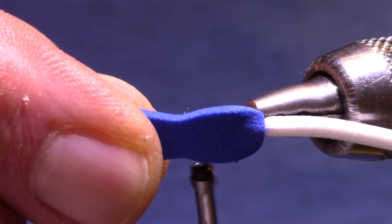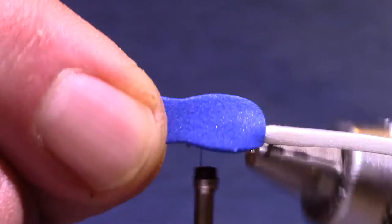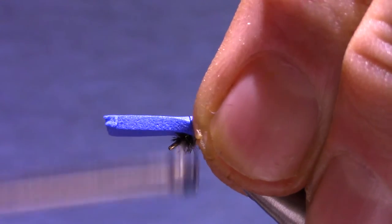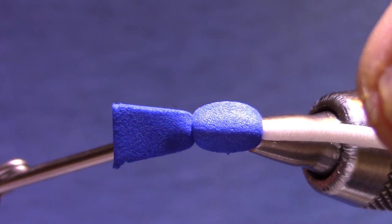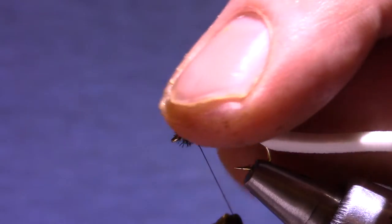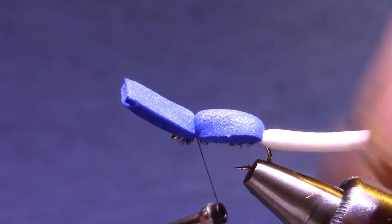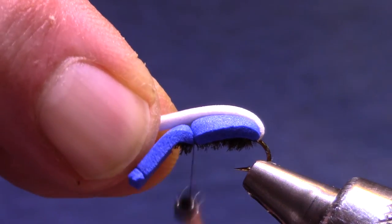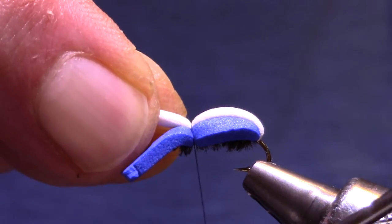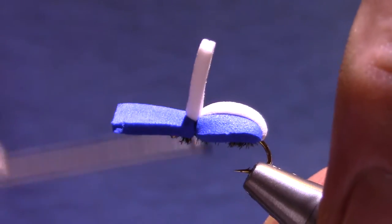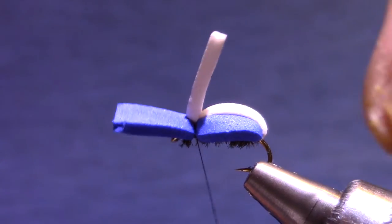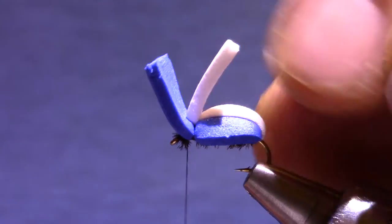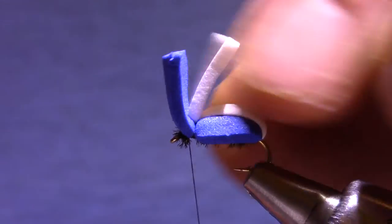Now if you look at the Beetle Cutter there's a narrow spot. The thread isn't always going to hit the narrow spot. That's okay. I'm going to make a couple of turns, leaving a little bit of space underneath. Pull the white foam over as a stripe. Now I don't go too tight because I don't want to cut the foam. So what I do is I'll lift it up and make a couple of security wraps right up on the hook.